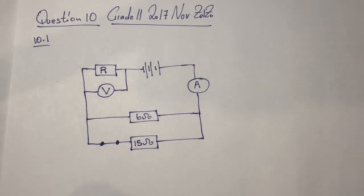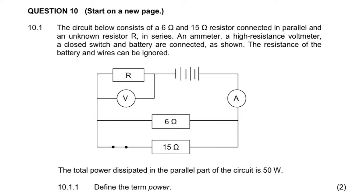As requested, we'll just quickly go through the circuit diagram, assuming that we're not given the statement. Just before we get started, you can see below the diagram we're given a statement which reads: the total power dissipated in the parallel part of the circuit is 50 watts.